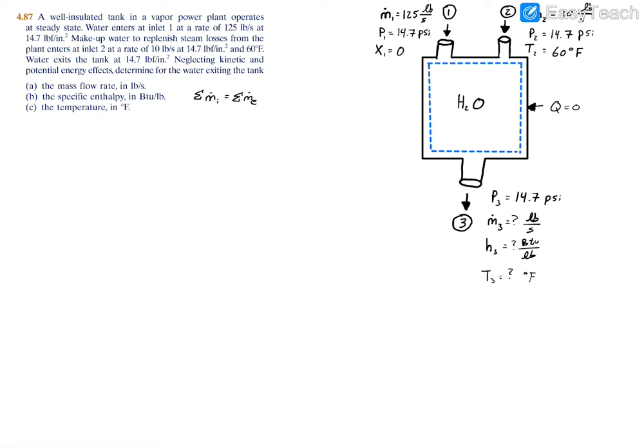If we sum our inlet mass flow rates, we have m1 plus m2 equal to our exiting mass flow rate m3. We have 125 plus 10 equals m3, which is simply 135 pounds per second.